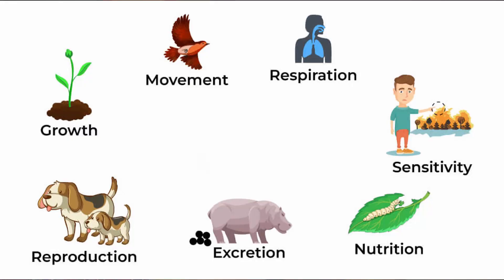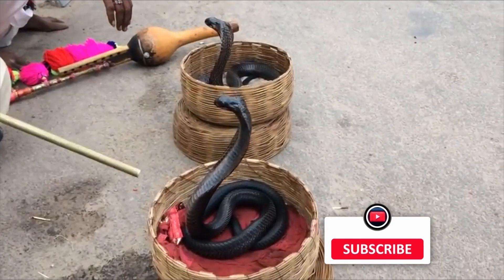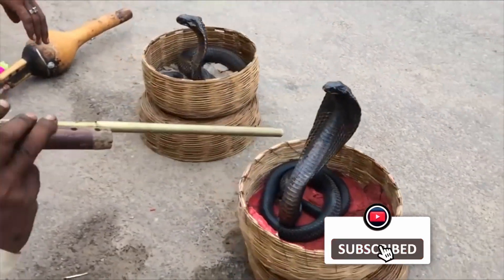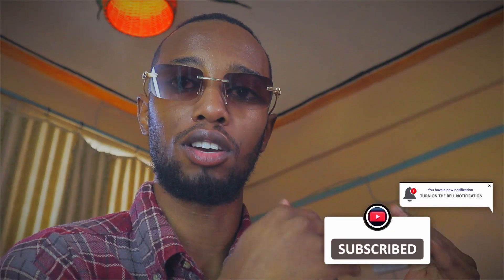According to living organisms, we have particular characteristics, and of these characteristics, what our senses mostly depend on is the characteristic of sensitivity. Whenever our senses are not sensitive, this is going to interfere with the other characteristics, which are actually our needs that we need to survive in the environment that we exist in.